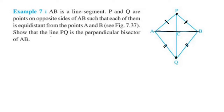Show that line PQ is the perpendicular bisector of AB. Now we are going to take a look at what perpendicular means. AB is perpendicular, meaning the angle at this point is 90 degrees. Also, the angle here means A is equal to B — that is, the bisector condition.